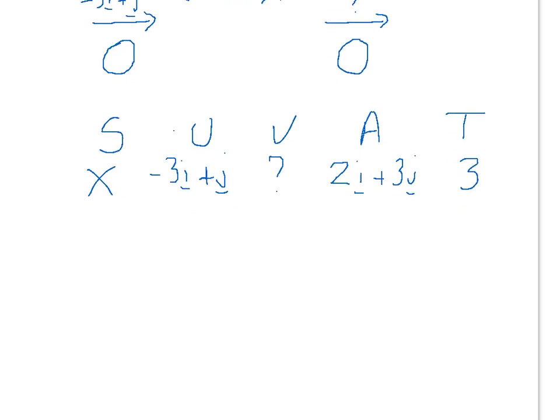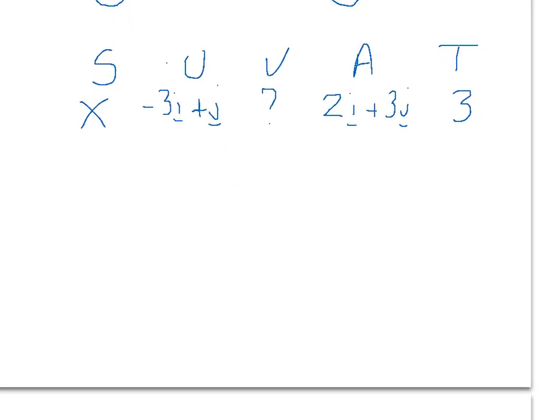So we're going to use the equation v equals u plus at. So v is what we're trying to find out. The initial velocity is minus 3i plus j. The acceleration is 2i plus 3j, all times by 3.